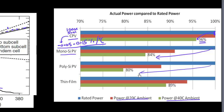Polycrystalline silicon is even worse, delivering only about 80%. Some thin film technologies actually fare better and have temperature coefficients better than single-crystalline silicon — that will be discussed in a later video. But multi-junction solar cells used under high concentration of light have the best temperature coefficient of efficiency, which is good news because these cells also have the highest efficiency and are placed in conditions with the largest changes in operating temperature.